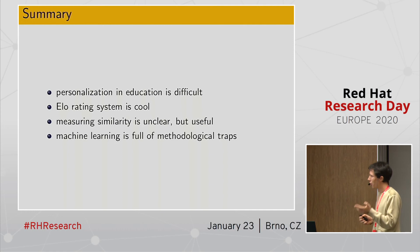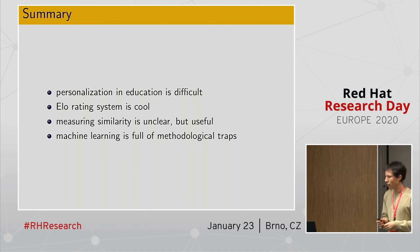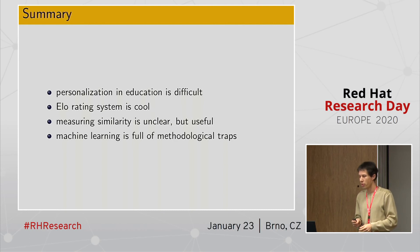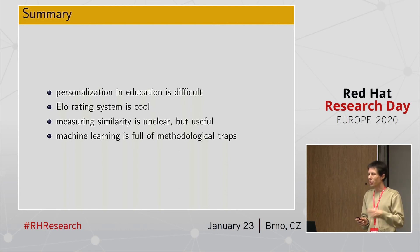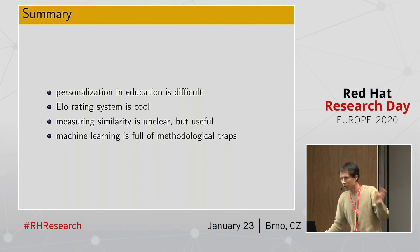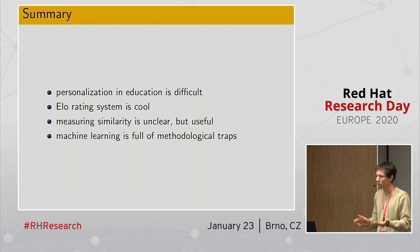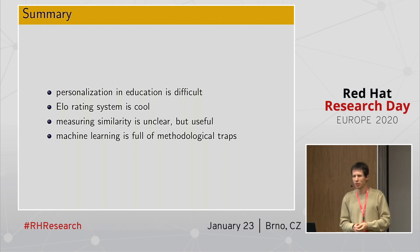To summarize, the main points: personalization of education is difficult — many people are working on it today but we have a far way to go. The ELO rating system, originally from chess, is applicable in many domains and is simple yet quite powerful — I definitely recommend having a look at it. Measuring similarity is kind of unclear because we don't have ground truth, but it's quite useful for many applications. And machine learning is full of methodological traps — many people are seduced by the availability of packages like TensorFlow, which allow you to seemingly easily implement powerful techniques, but then they end up evaluating using some ad hoc metric without thinking whether it's suitable, which can lead to quite misleading and dangerous results.